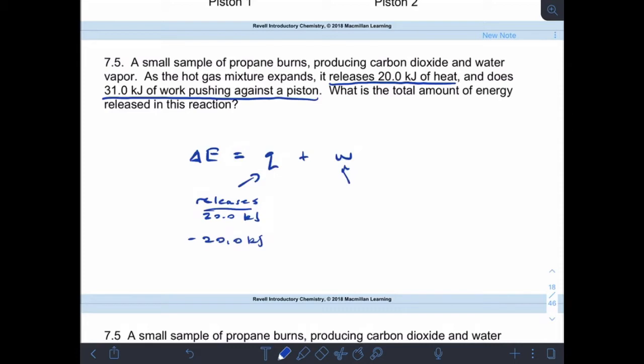Okay, and then with the work, it says that the system does work. Okay, so work is coming out of the system. All right, so it says that it does work worth of 31 kilojoules. So that's negative 31 kilojoules. Right, so delta E equals Q plus W. So then I just plug in those values. So negative 20 plus negative 31 means that the change in energy is negative 51 kilojoules.